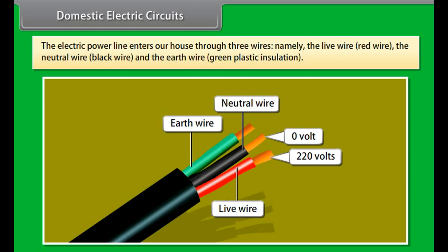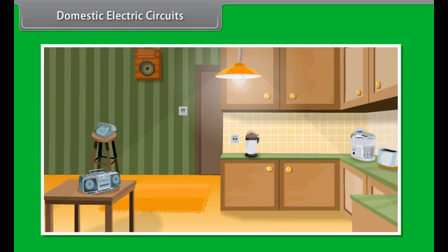Thus, the potential difference between the live wire and the neutral wire is 220 minus zero which equals 220 volts. There are different circuits used for different appliances being used in the house.